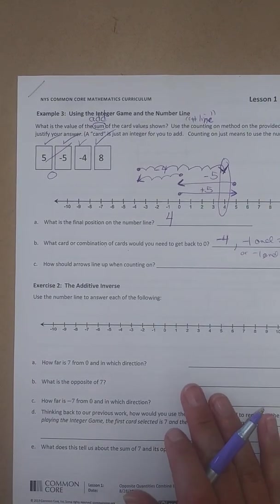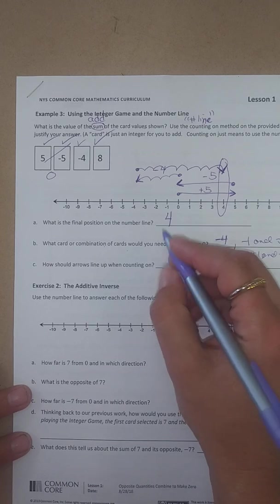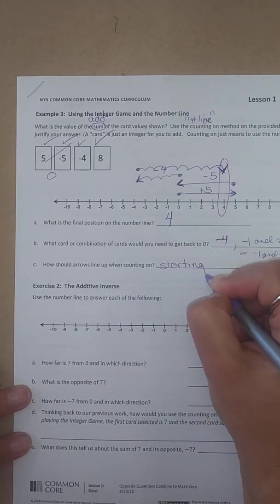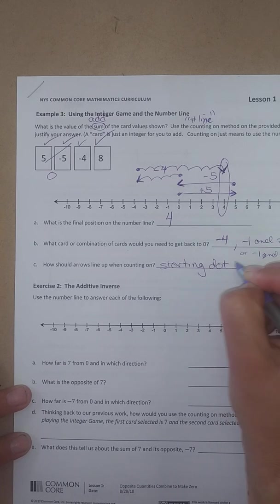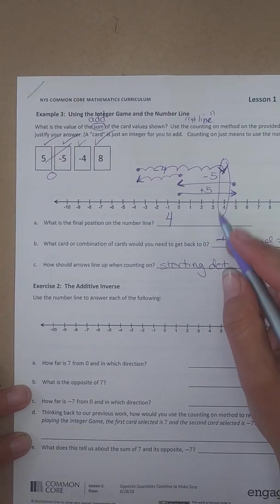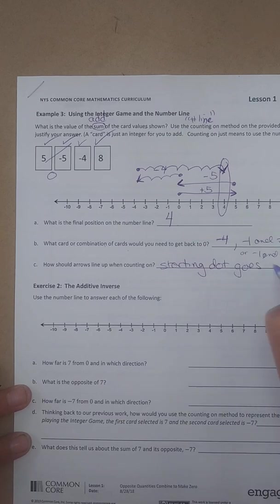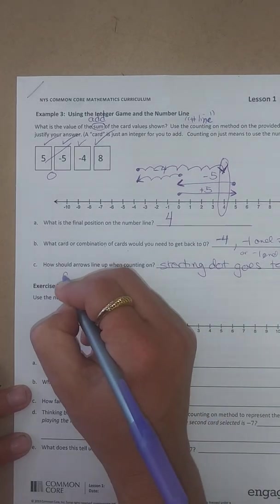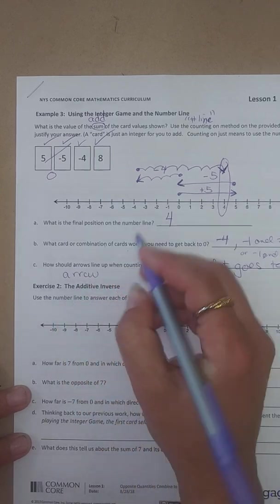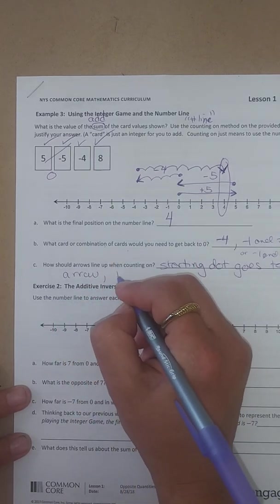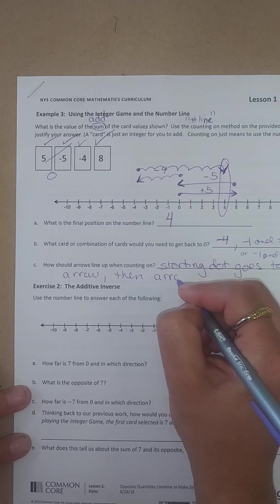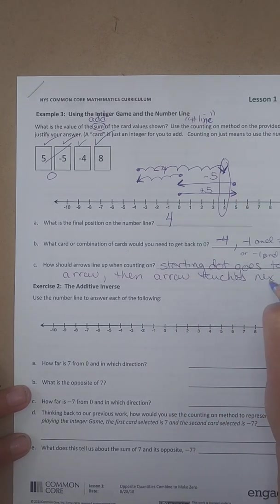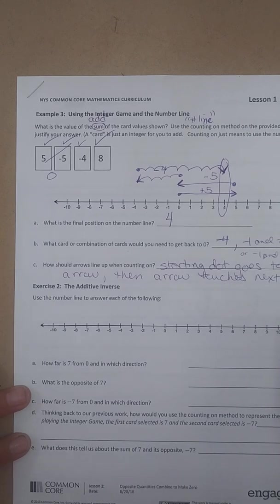How should arrows line up when you're counting on? You know, the starting dot goes to ending arrow, then the arrow touches the next dot, something like that.